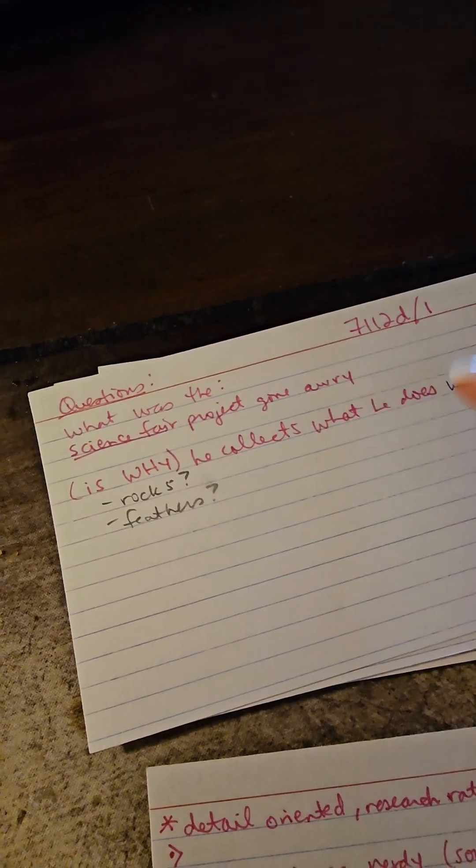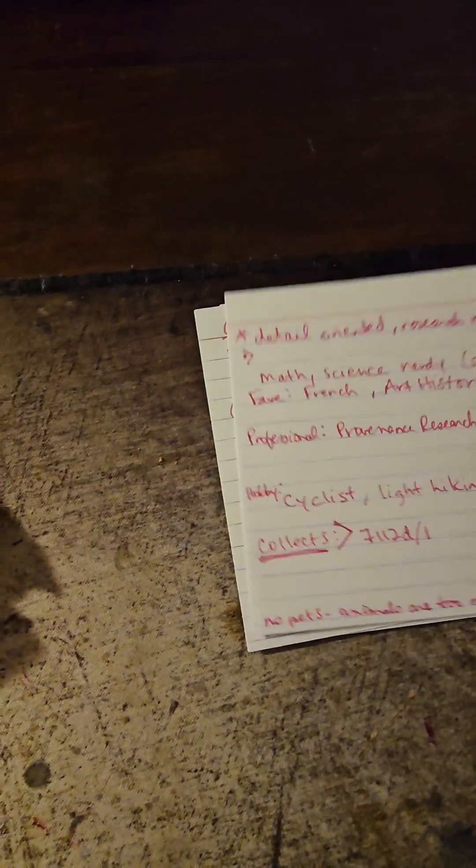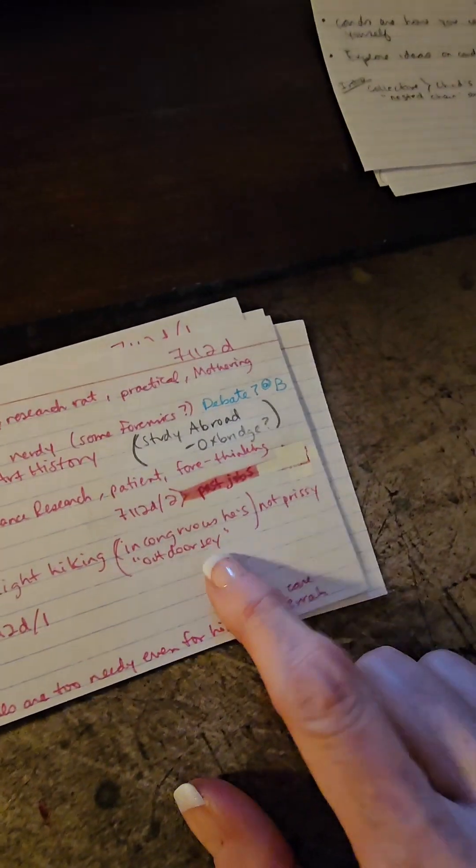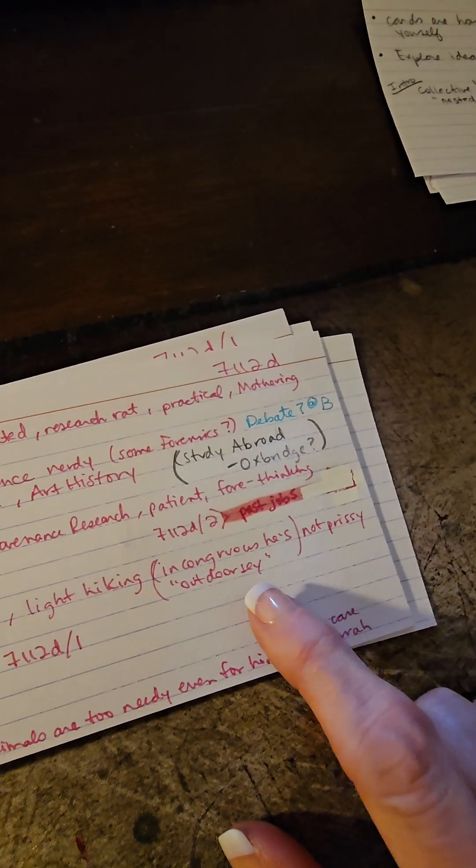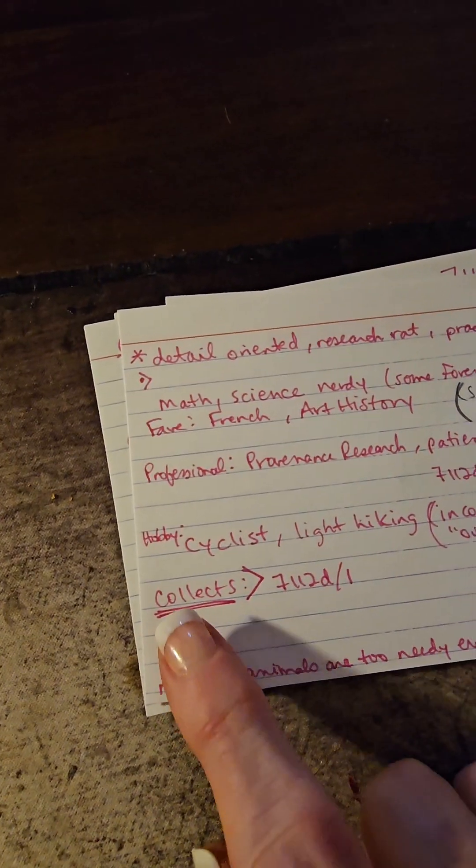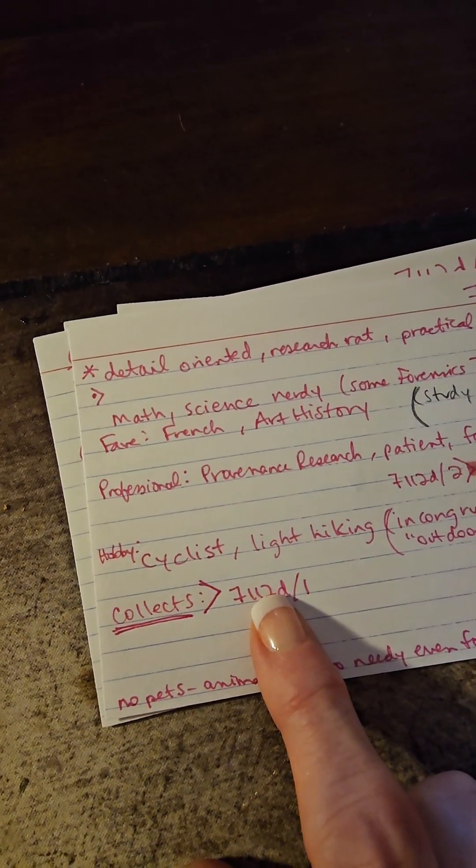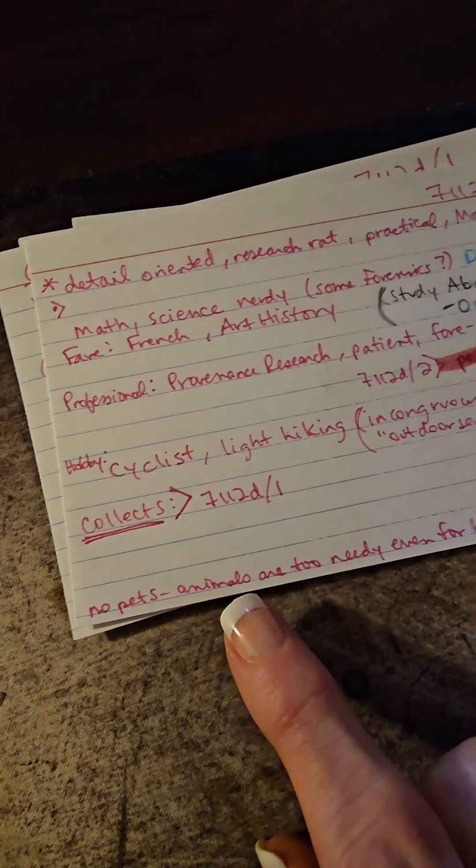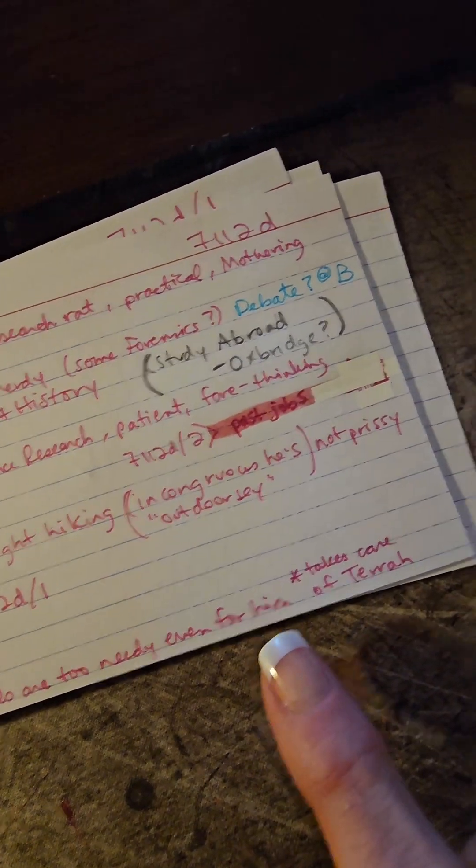Let's continue on this card. Hobby: he's a cyclist, he likes light hiking. That's incongruous because he's an outdoorsy guy, he's not prissy, even though he's a museum researcher. Collections, I've already gone over that. Collections are yet to be revealed. No pets. He thinks that animals are too needy, even for him, even though he takes care and mothers Tara, so that's interesting.